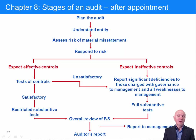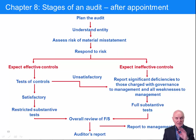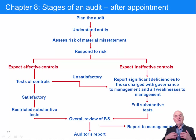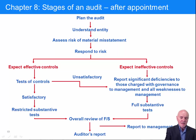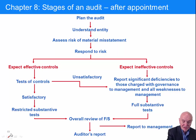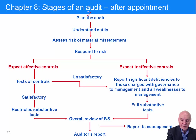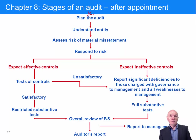Subsequent chapters will go on to look at risk and the various ways in which audit evidence can be collected. This is the second time you have seen this diagram, and it's worth, before we go on, just completing the overview of the stages of the audit. It started really before the planning stage — the last chapter dealt with whether to accept or not. So we're through that stage, we've accepted it, and now we're into planning.